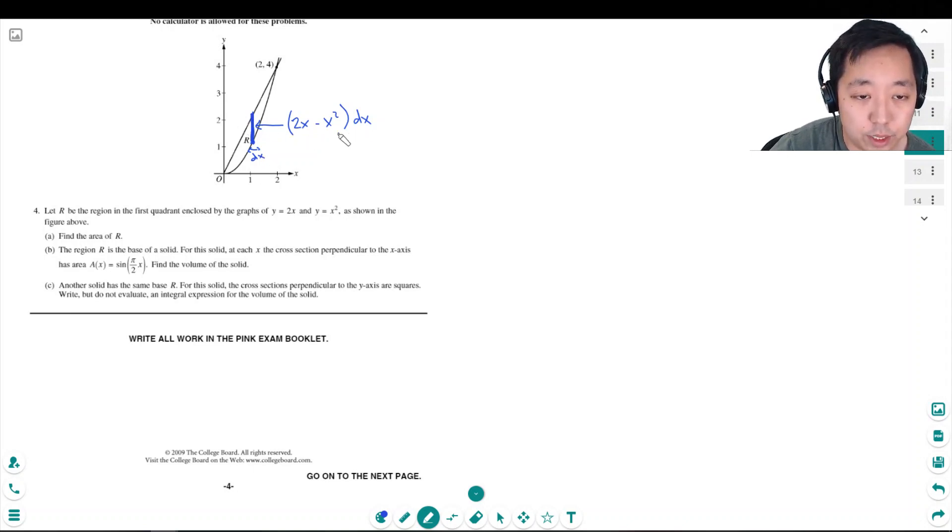I'm gonna multiply that by dx because the width of this rectangle is dx. So the area of this rectangle is the width times the height, and the total area is the sum of all the rectangles. I want to do the rectangles from x equals 0 to x equals 2.